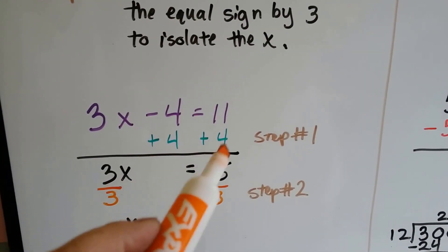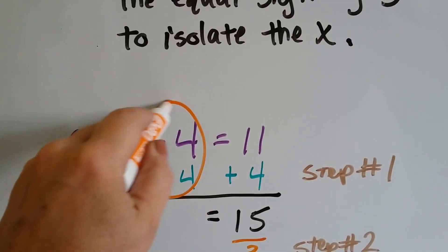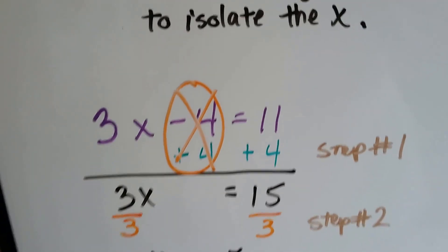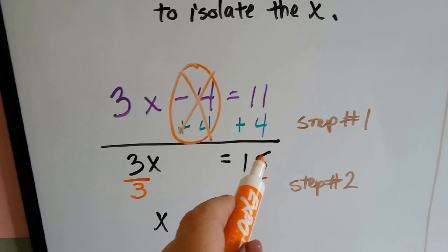So step 1 is adding 4 to both sides. That creates a zero pair here, and we can cancel this out. And 11 plus 4 is 15, so now we have 3x equals 15.